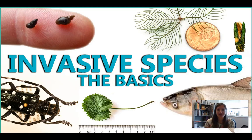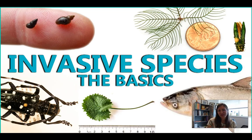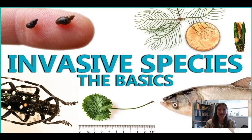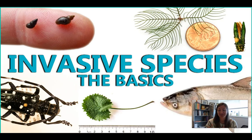If keystone species have a huge positive effect on an ecosystem, then nearly the opposite would be invasive species, which have a pretty big negative effect on an ecosystem. So we're kind of talking about the two ends of the spectrum.